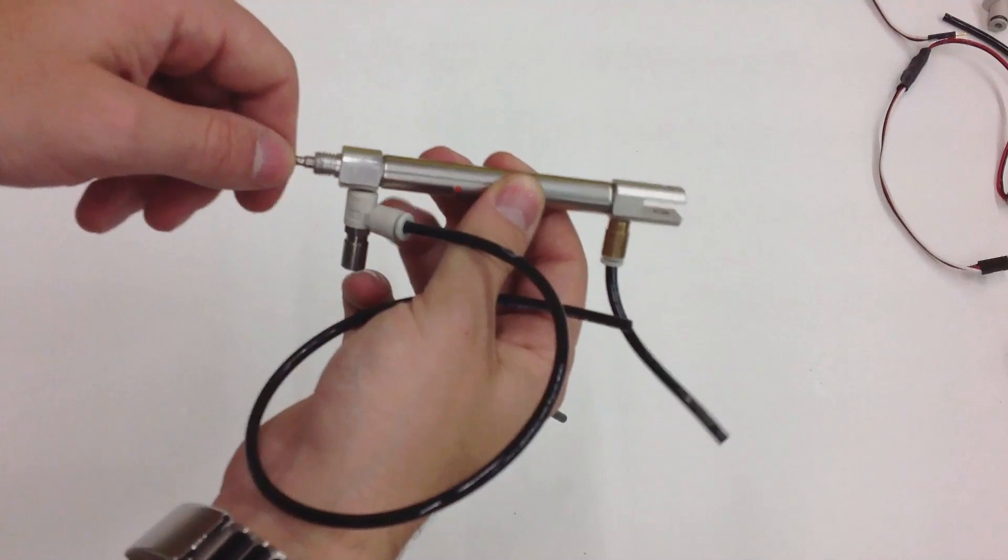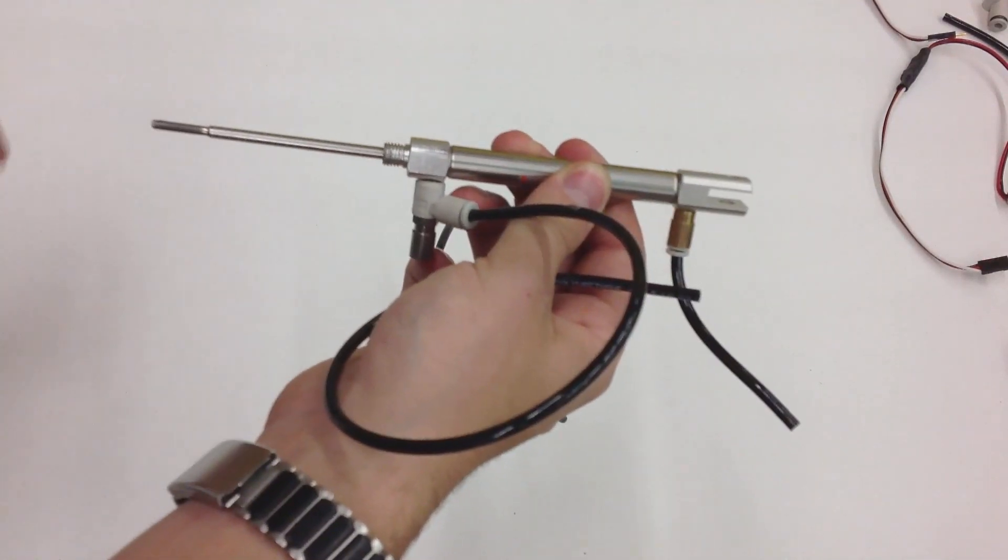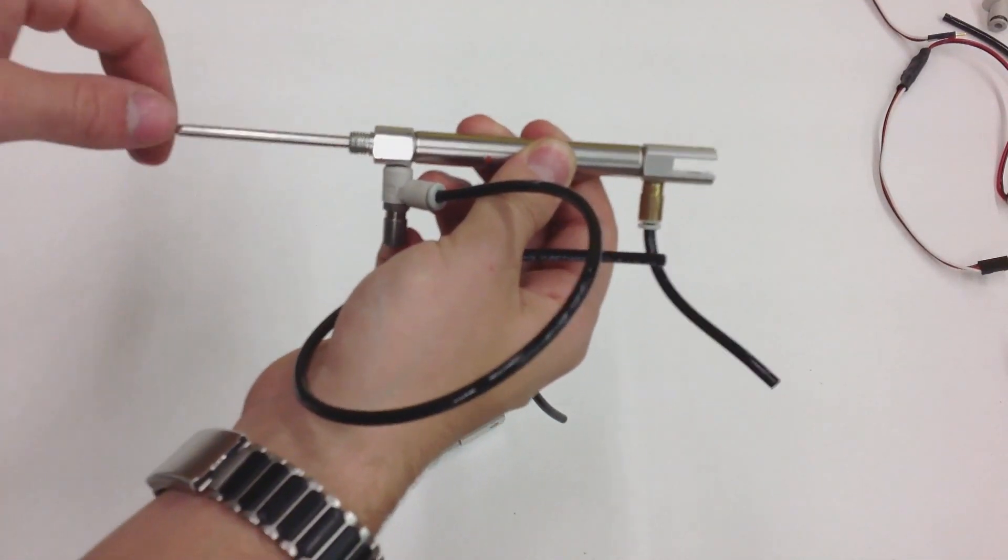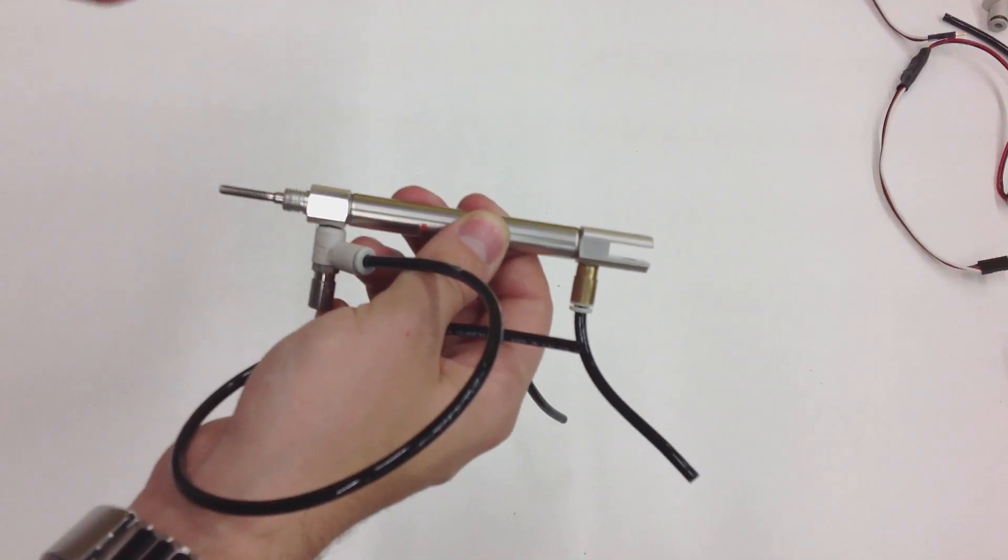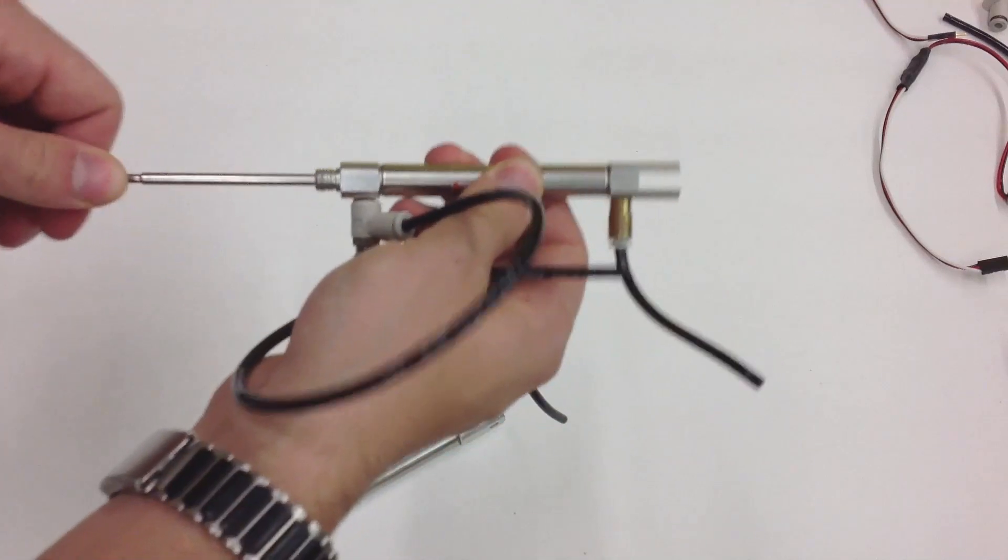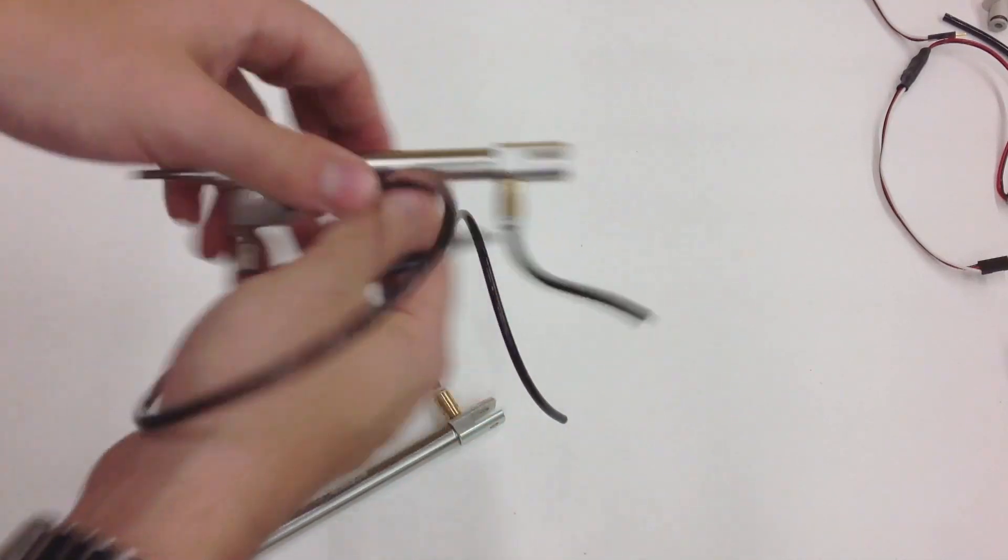Or there's the double action piston. The difference is that it deploys and stays deployed, so the second action is to command the piston to retract. One command, second command.